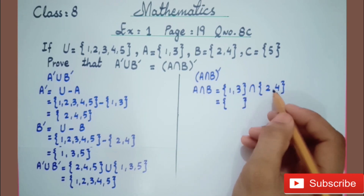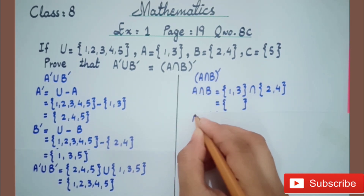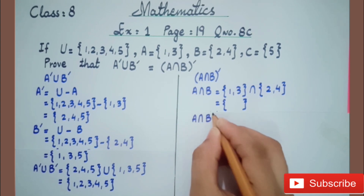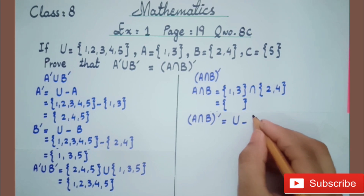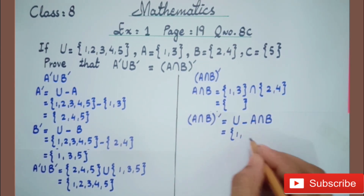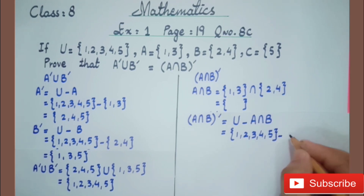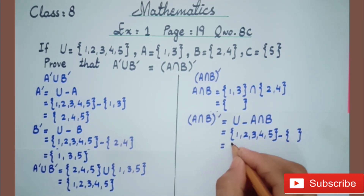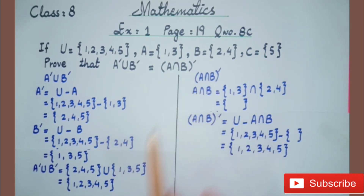Now we will find the whole complement of A intersection B. The formula is universal set minus A intersection B. Universal set is {1, 2, 3, 4, 5} minus empty set. The answer is {1, 2, 3, 4, 5}. It is proved that the left-hand side is equal to the right-hand side.